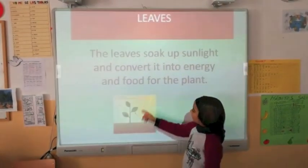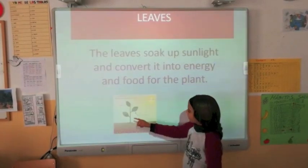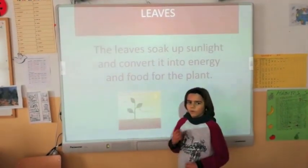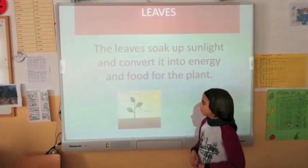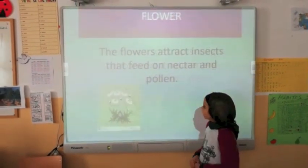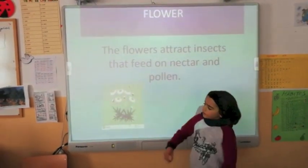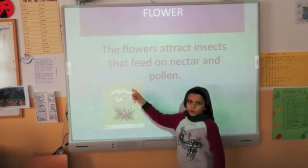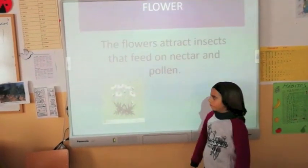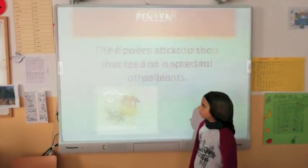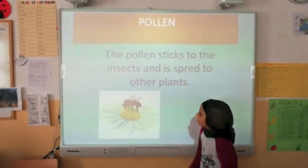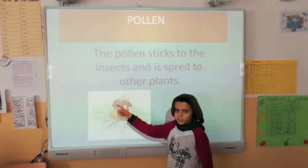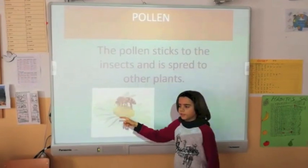The leaves soak up sunlight and convert it into energy and food for the plant. The flowers attract insects that feed on nectar and pollen. The pollen sticks to insects and is spread to other plants.